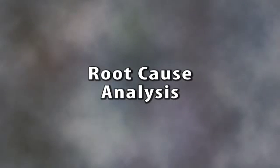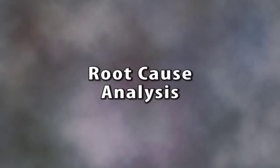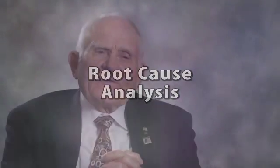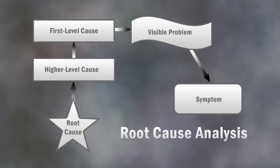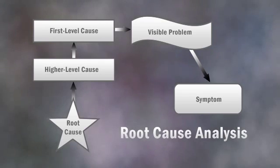Root cause analysis is a problem solving technique that answers three questions: Why did the problem occur in the first place? What caused the problem? What is a possible solution — one that reduces the likelihood of the problem happening again? Often called RCA, root cause analysis tries to solve problems by attempting to identify and correct the root cause of an event, not the symptoms of it. We use RCA to find what items are driving our processes, making things good or bad, by getting to the core — not the symptoms.